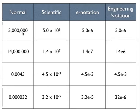So we have five million which is written as 5.0 times ten to the sixth because we have to move the decimal point six places in order to get a number here that's between one and ten. With e notation we replace the ten with an e, so it's five e to the sixth. And since six is divisible by three, in engineering notation it's the same thing, five e six.